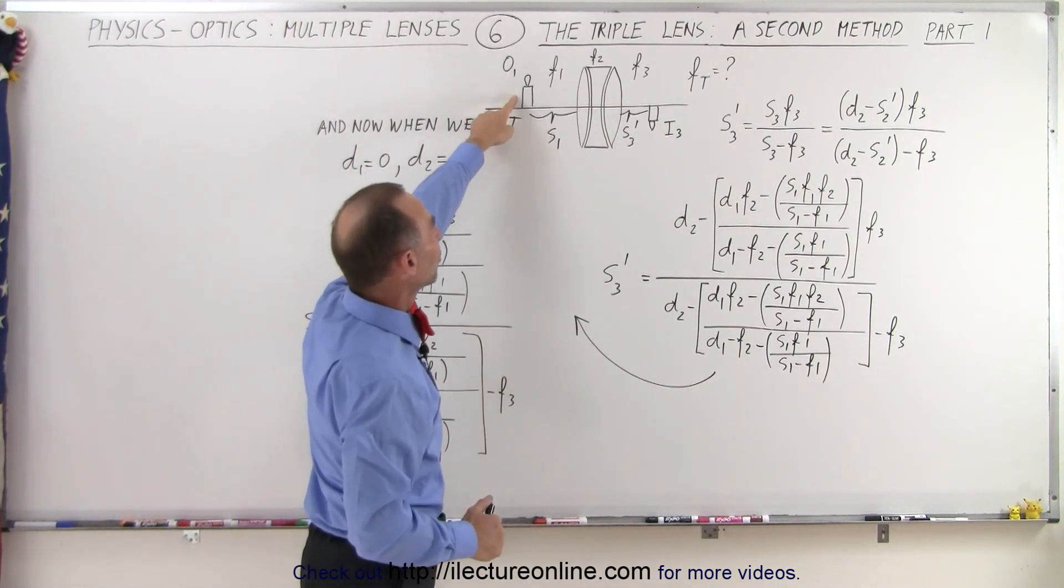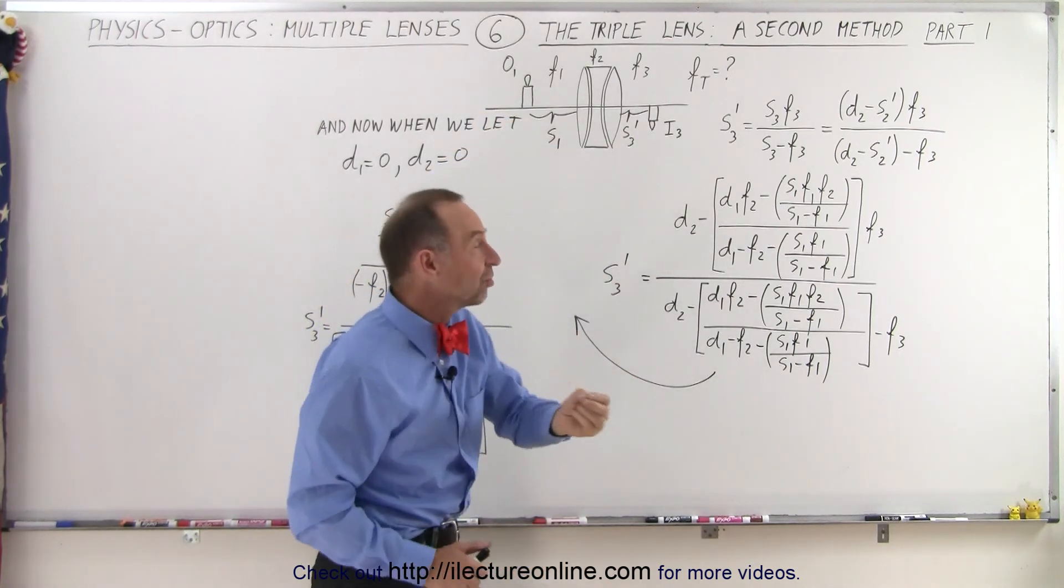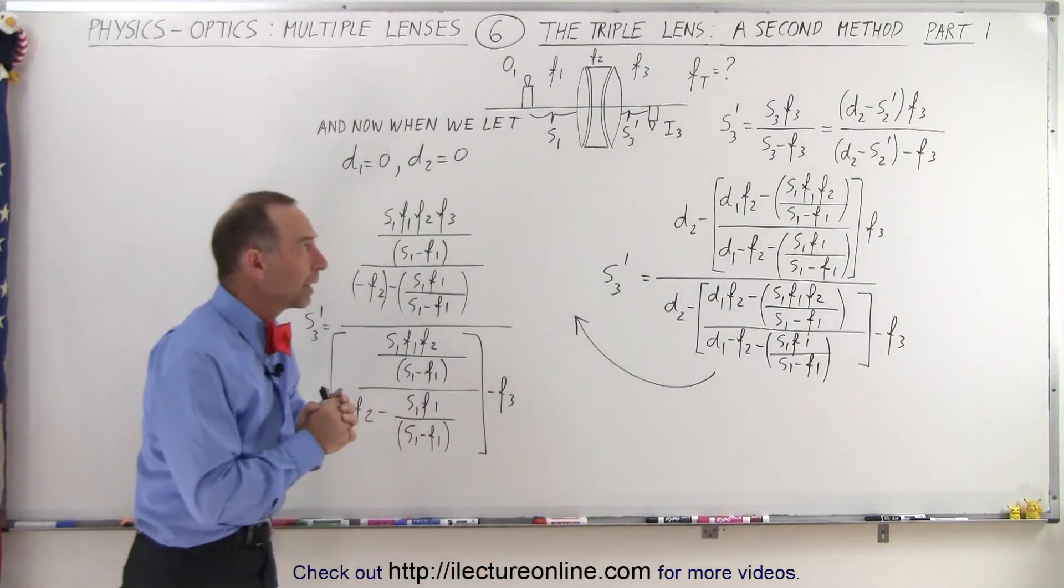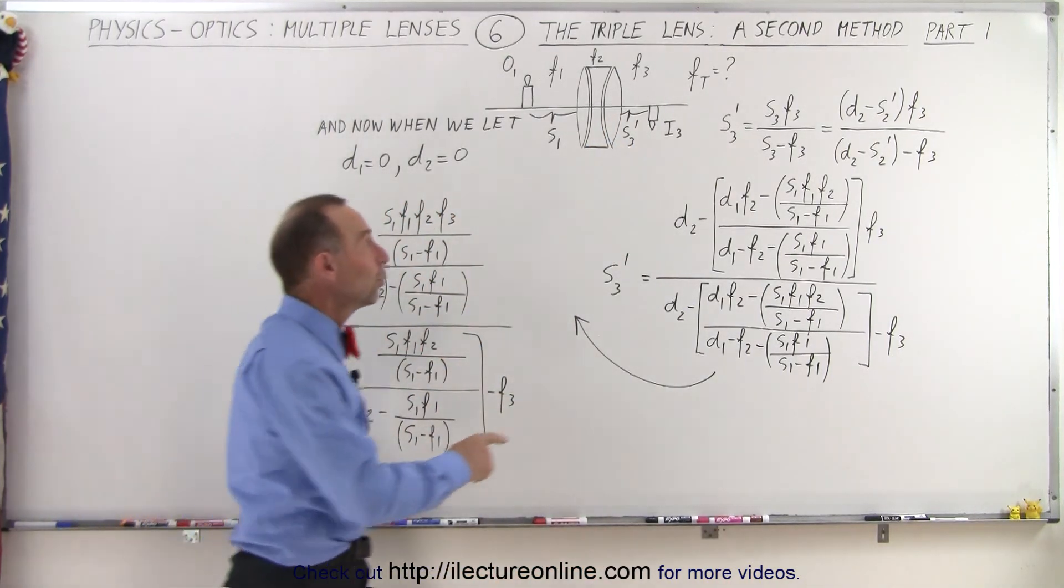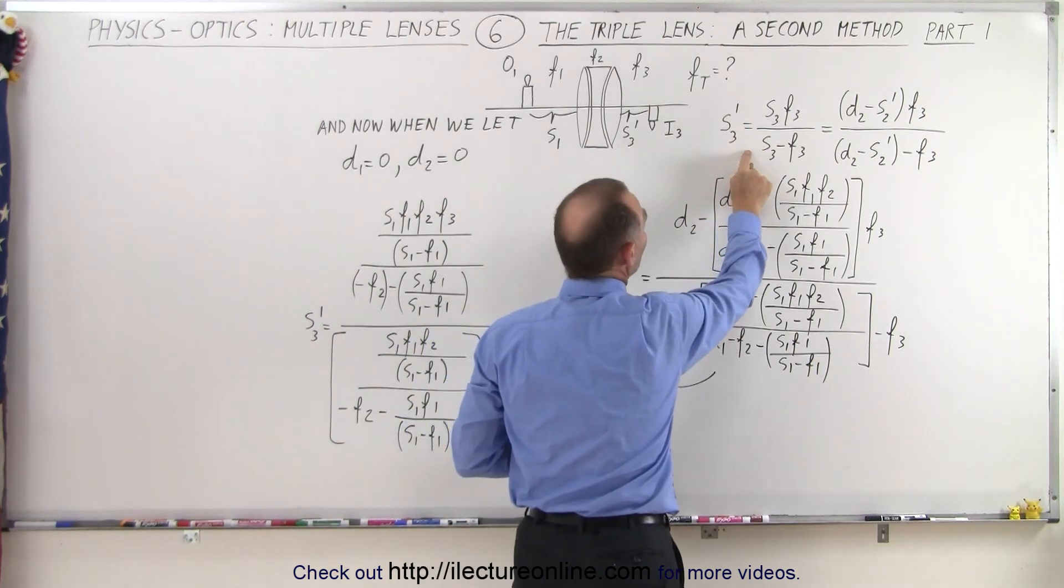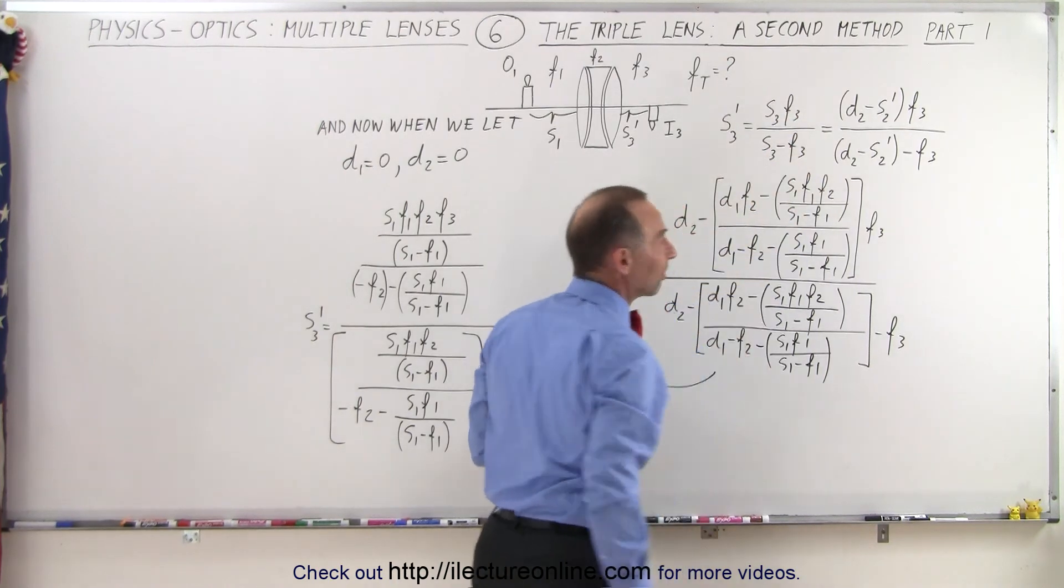S1 is the distance from the original object to the first lens, and S3 prime is the image distance from the final image to the third lens. Now we know that we can say that S3 prime is going to be equal to the product of S3 times F3 divided by S3 minus F3.